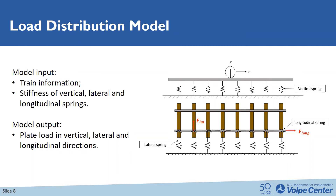Once we know the minimum spike load required to initiate the spike failure, we want to understand how the load from the rail is distributed to the spike. Here is the analytic model we used to answer this question. This model is composed of vertical, longitudinal, and lateral spring series. For the model input, we need to input the train information and assume the stiffness of each spring. Then, running the model, we are able to obtain the plate load in vertical, lateral, and longitudinal directions.